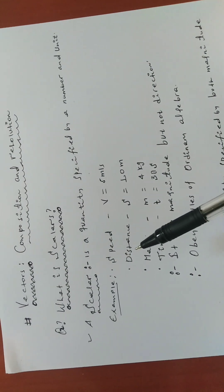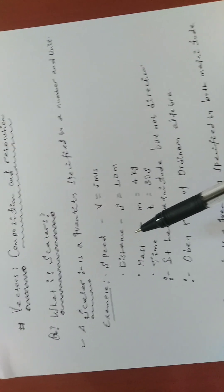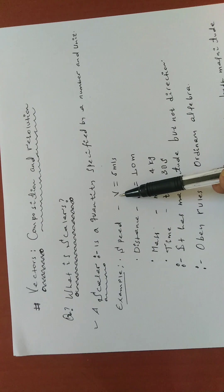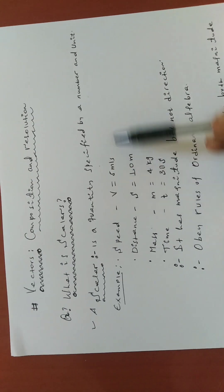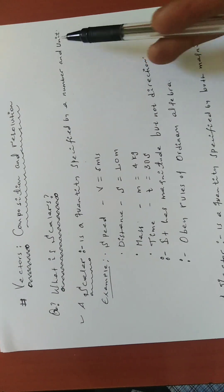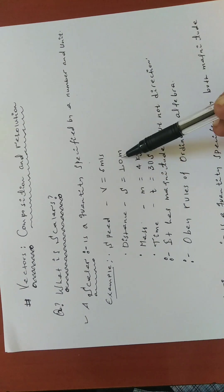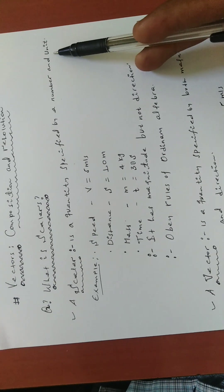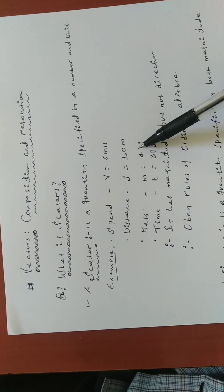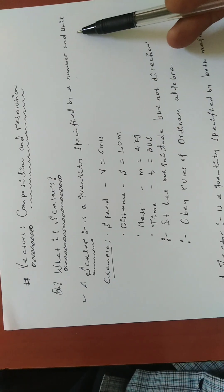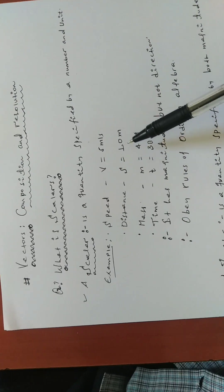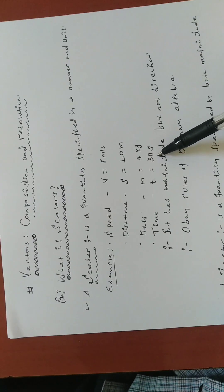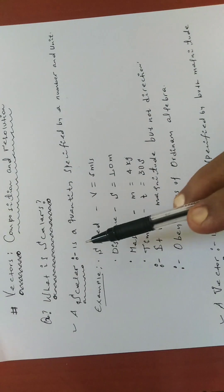For example, speed, distance, mass, and time are all scalars, because they are specified by a number and a unit. Speed is represented by v — five meters per second; five is the number, meters per second is the unit. Distance is represented by s, which equals 10 meters; 10 is the number, meter is the unit. Mass: m equals four kilograms; four is the number, kilogram is the unit. Time: 30 seconds; 30 is the number, second is the unit.